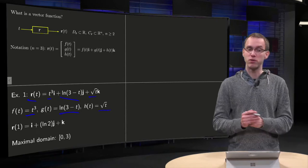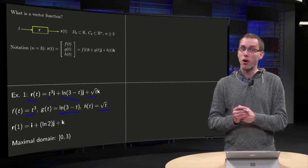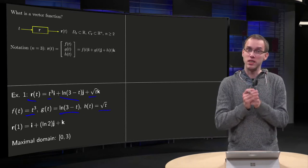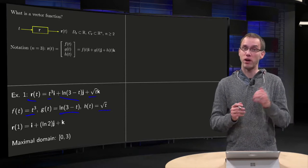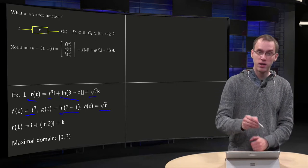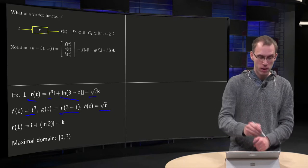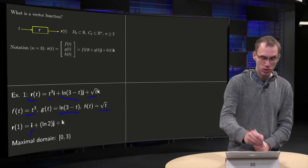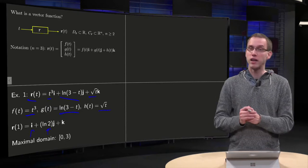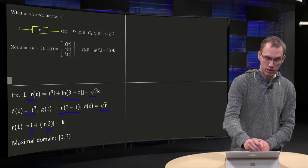So how do we compute, for example, the r(1), if our input is t equals 1? Then we just plug in t equals 1 into f, g, and h, and we get 1³ equals 1, so we get an i over here, ln(3-1) equals ln(2), so ln(2) times j, and the square root of 1 equals 1, so we get 1 times k.